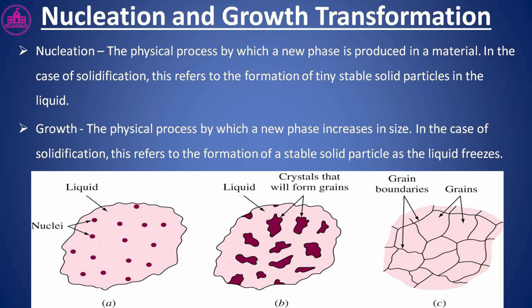Nucleation is the physical process by which a new phase is produced in a material. In the case of solidification, this refers to the formation of tiny stable solid particles in the liquid. Growth is the physical process by which a new phase increases in size. In the case of solidification, this refers to the formation of a stable solid particle as the liquid freezes.